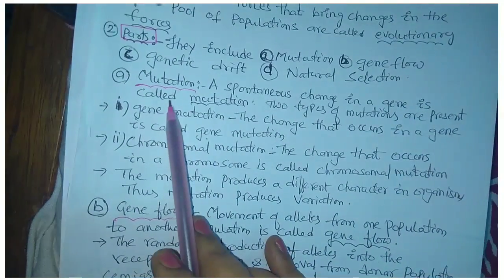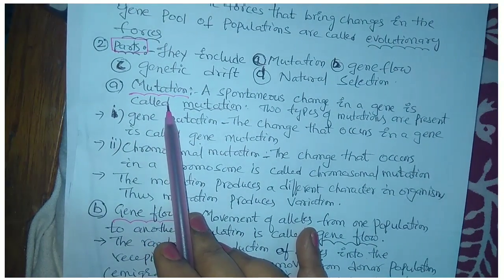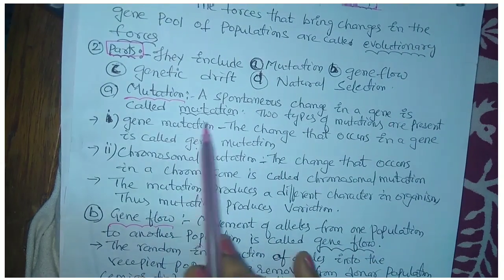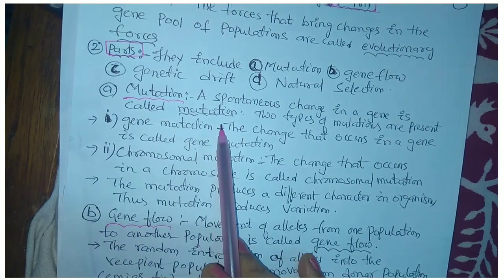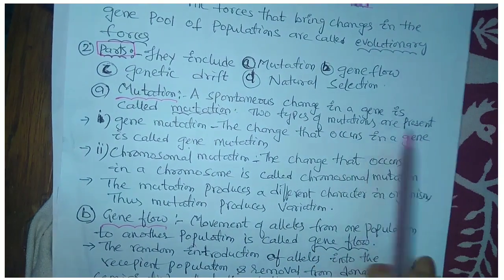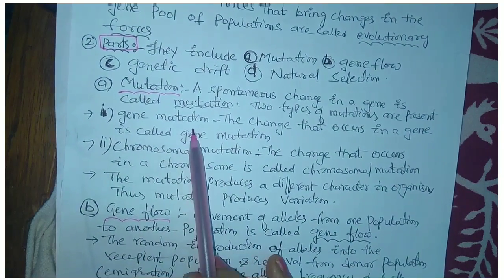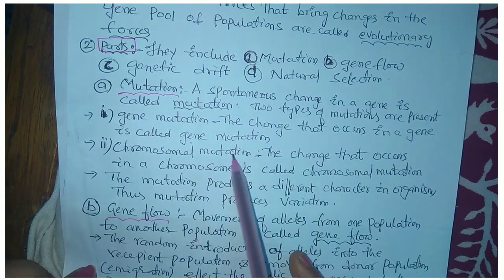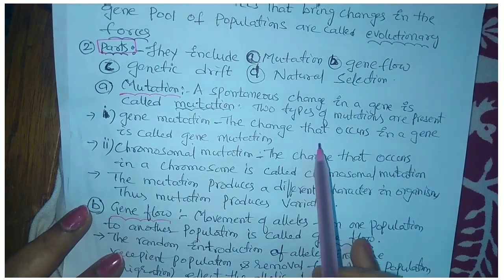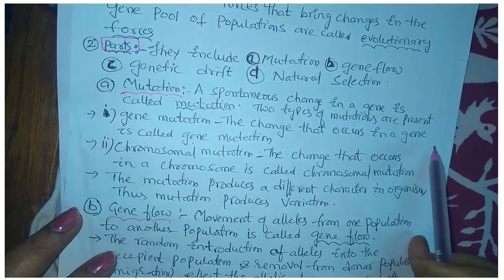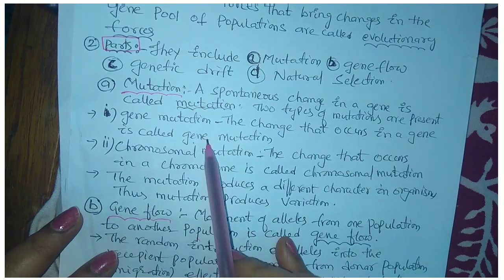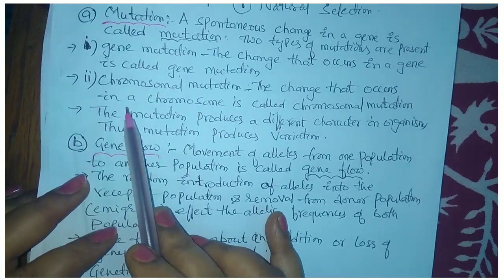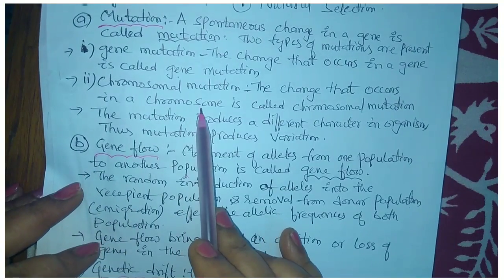First, what is a mutation? A spontaneous change in a gene is known as a mutation. There are two types of mutations. One is a gene mutation — the change that occurs in a gene is known as a gene mutation. The second one is known as a chromosomal mutation.